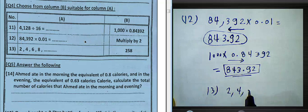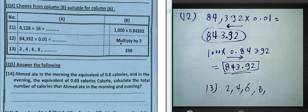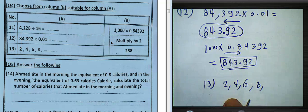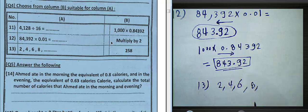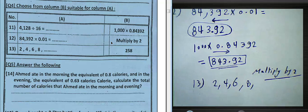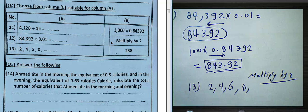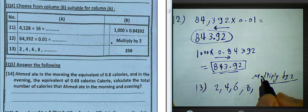Question number thirteen: the sequence 2, 4, 6, 8... The rule here is to add 2 each time, or multiply by multiples of 2. Two plus two equals four, four plus two equals six, six plus two equals eight, and so on. The rule is adding 2, or multiples of 2.